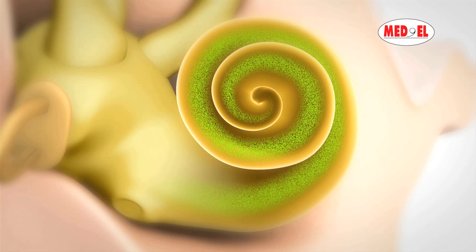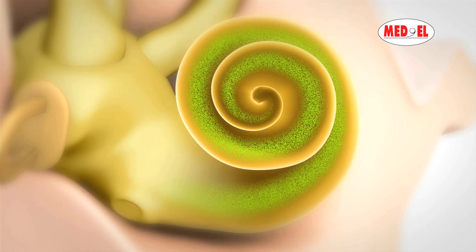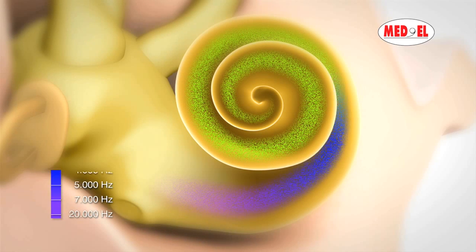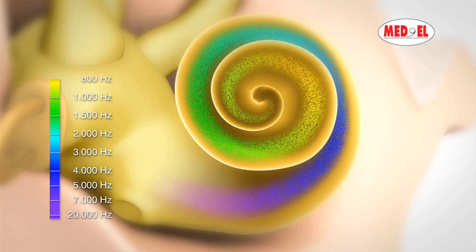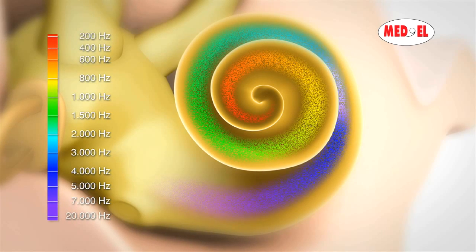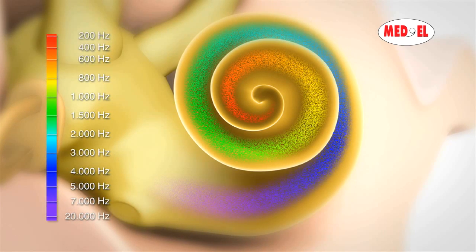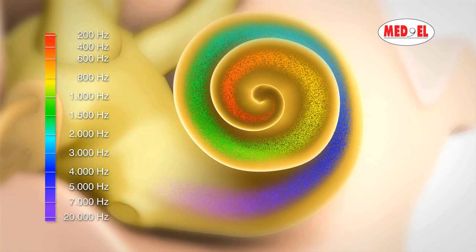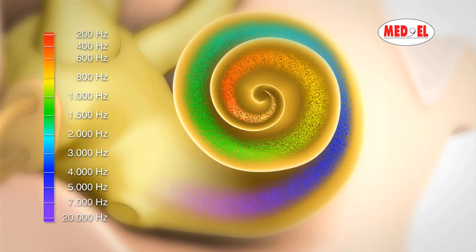The change from mechanical vibration to electrical pulse is a complex process resulting from the movement of hair cells in the cochlea. Along the entire length of the cochlea, the hair cells are arranged like the keys of a piano. Hair cells located at the base or lower region of the cochlea are responsible for high frequency, while hair cells at the apex are responsible for the low frequencies.